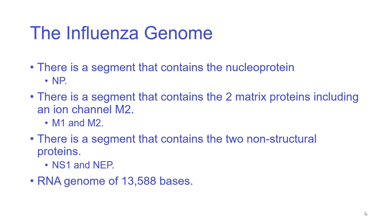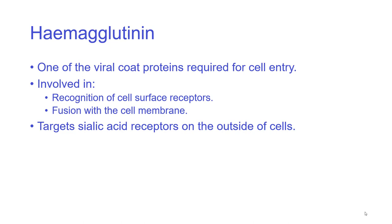The RNA genome in total contains 13.5 kilobases. Hemagglutinin is one of the viral coat proteins and is required for cell entry. It recognises surface cell receptors — specifically sialic acid receptors — and fuses with the cell membrane. First, recognition occurs: the sialic acid pulls the virion, the single virus capsid, onto the surface of a cell. Then the two lipid bilayers fuse with one another, and the material from inside the virion can enter into the cell.